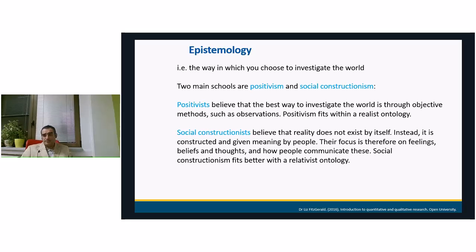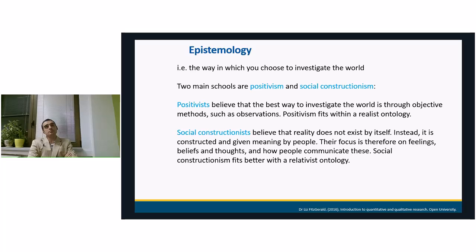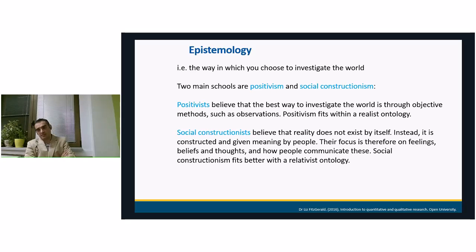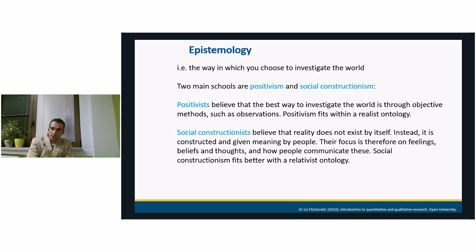Social constructionists fit with the relativist ontology. So we have the realists and the relativists. Constructionism holds that reality is constructed, while positivists — the realists — say that reality can be revealed. Now the third part: as I said, they are all interrelated. How we see the world, and what is the best way to research it, leads us to methodology. Realists tend to have a positivist approach — the world is real — and they gather quantitative data that is measurable, such as years of education, salary, kilometers traveled, or cigarettes smoked. On the other hand, relativists tend to have the social constructionist approach, which relates to qualitative data that we will discuss today.